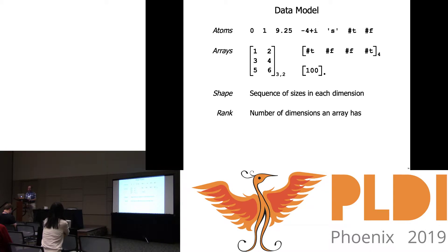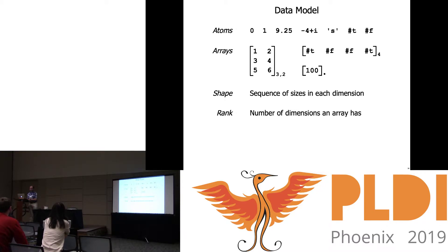Why is a scalar not a one-dimensional array — why is that rank zero rather than rank one, as opposed to being a unit-length vector? The lifting rules can be written more simply if you have the idea of a zero-dimensional array as the base case, versus a one-dimensional vector which can grow to be anything.